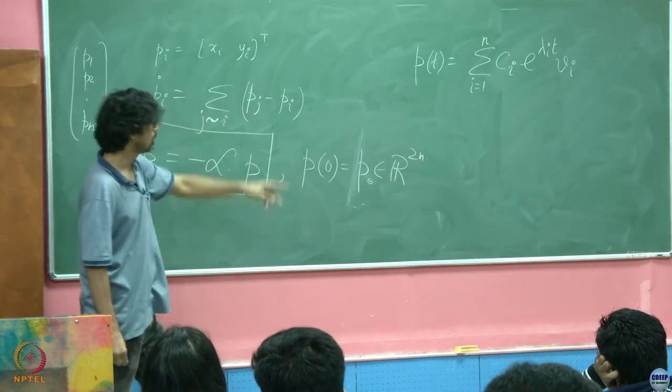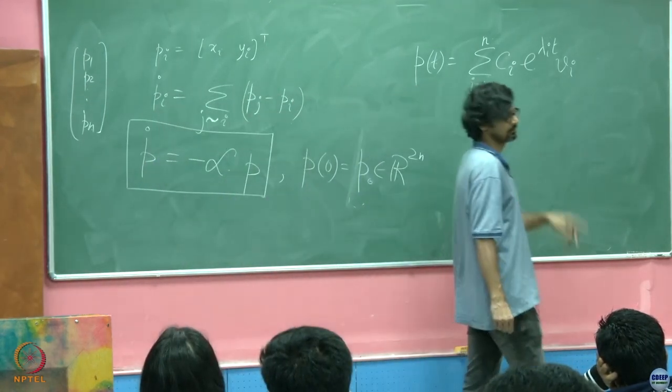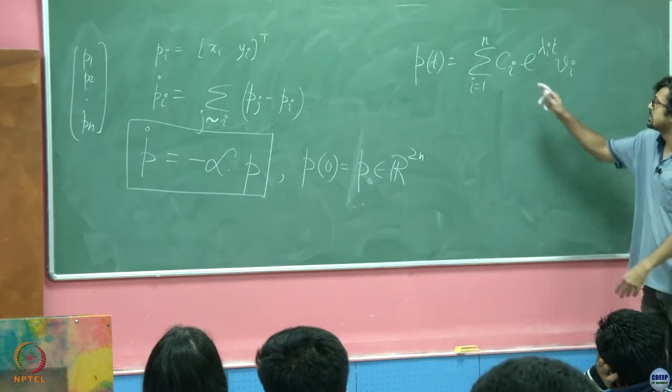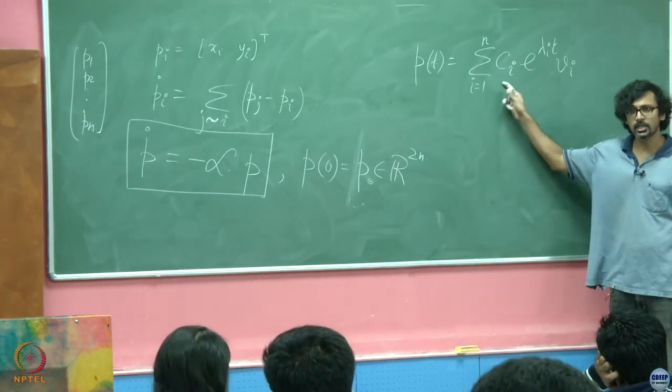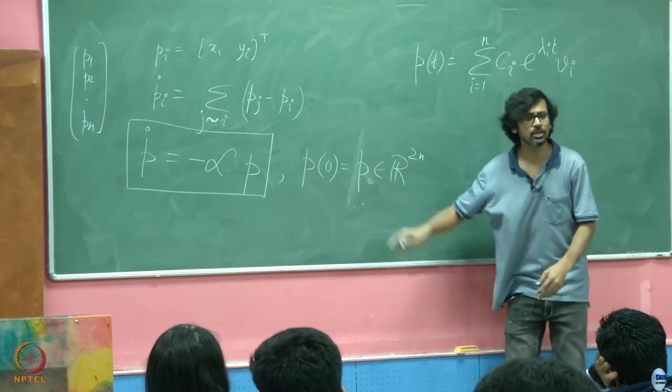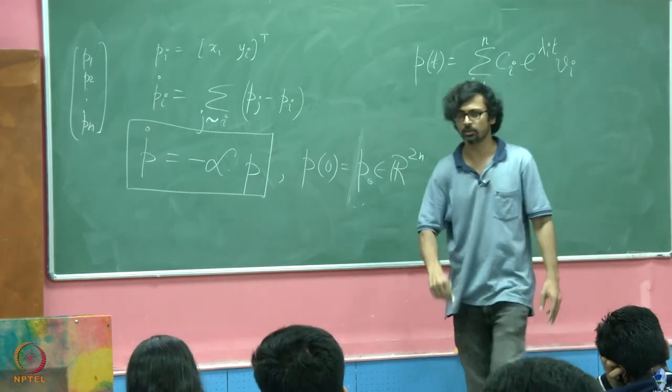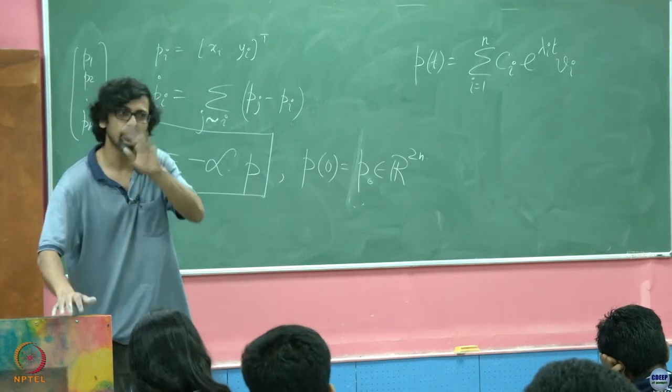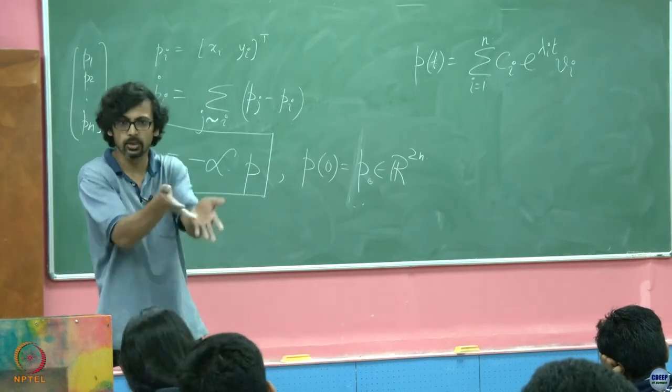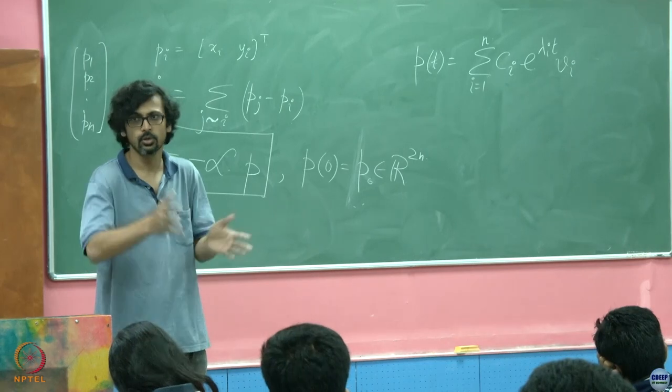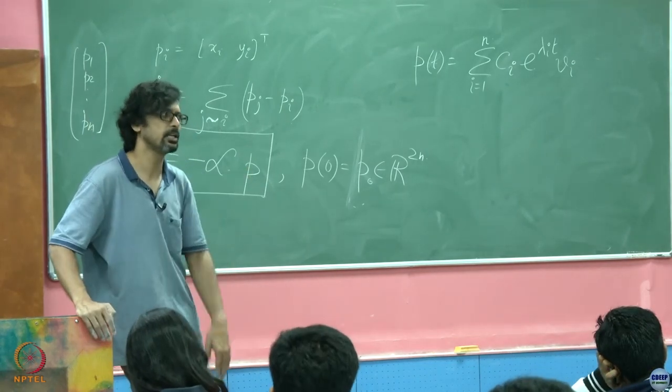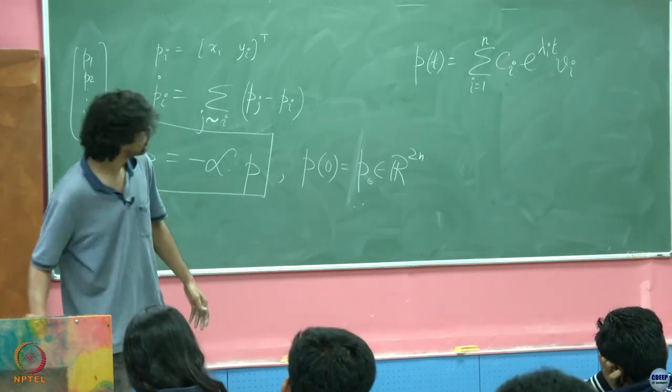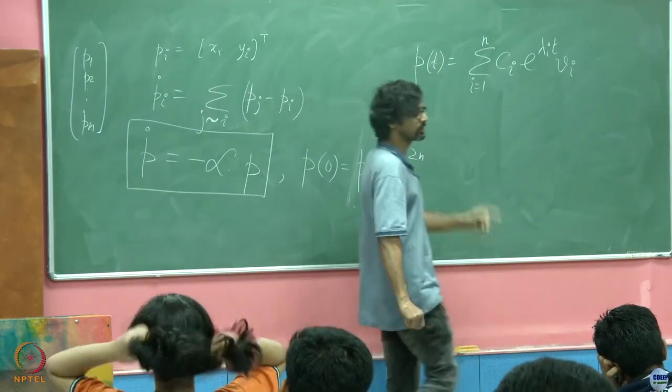This is the solution. How do you solve for these c's? These c's are solved essentially by using the initial conditions. How do you solve differential equations? You get a solution with some constants. How do you evaluate the constants? Because you know the initial condition. So you equate them at the initial condition by putting t equals 0.